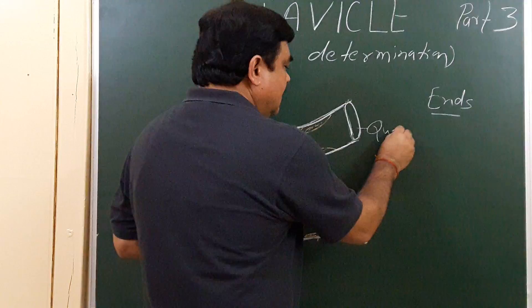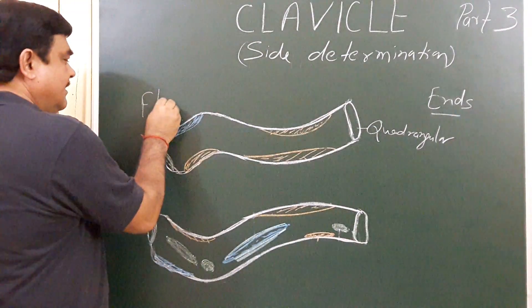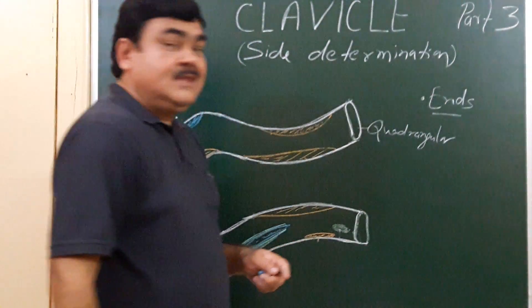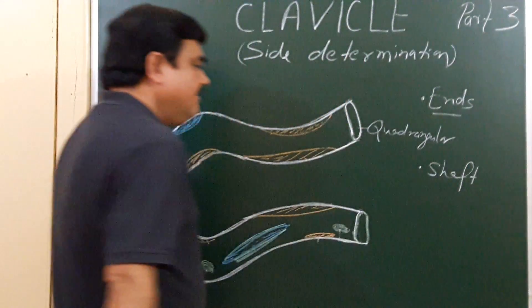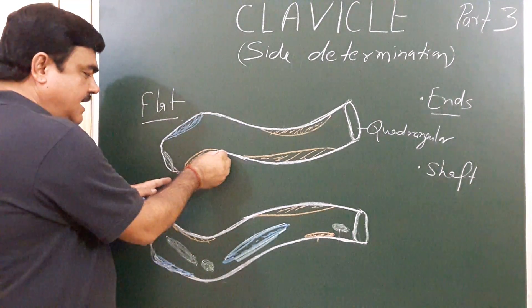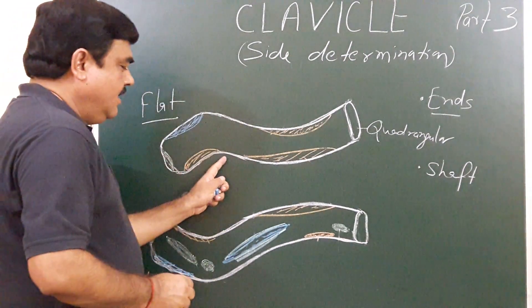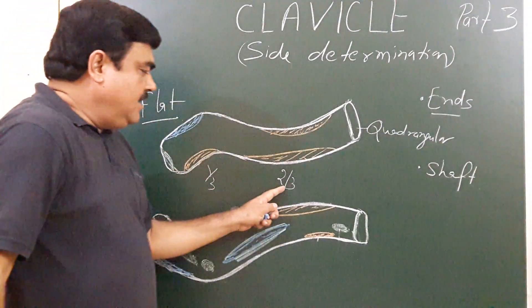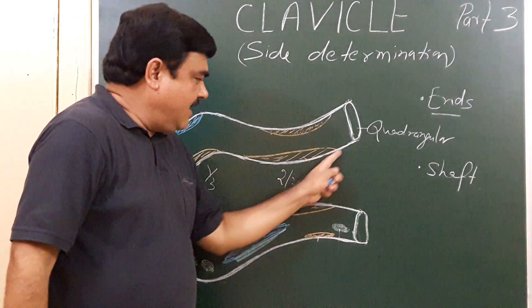Another thing is the curvature of the shaft. The lateral one-third part is anteriorly concave, and the medial two-thirds part is anteriorly convex. So this is convex, and this is concave.